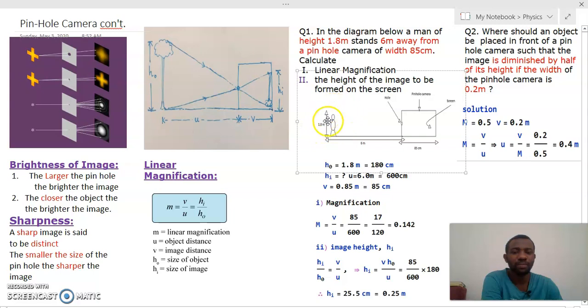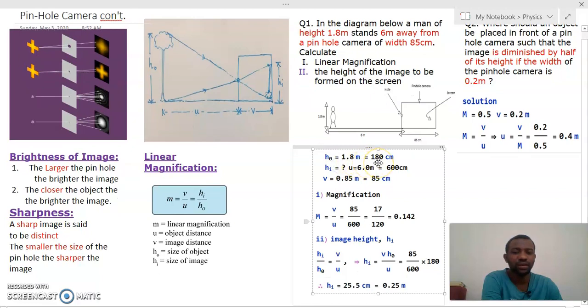If you look at our diagram, we've got a man, the height is 1.8 meters, that will serve as our ho, object height, which is 1.8 meters. Then if you convert it to centimeters by multiplying by 100, you end up with 180 centimeters. The hi is one of the questions we are supposed to answer. Object distance from the object to the pinhole is 6 meters, which can also be converted to 600 centimeters. Then the image height is 0.85 meters, equivalent to 85 centimeters.